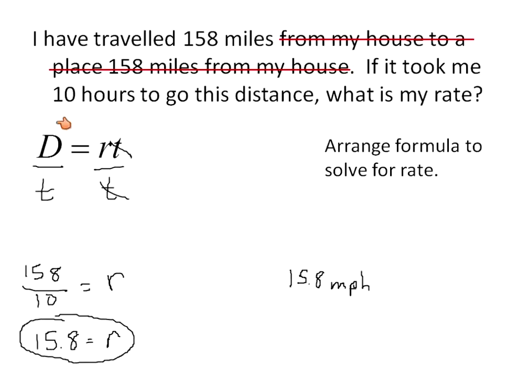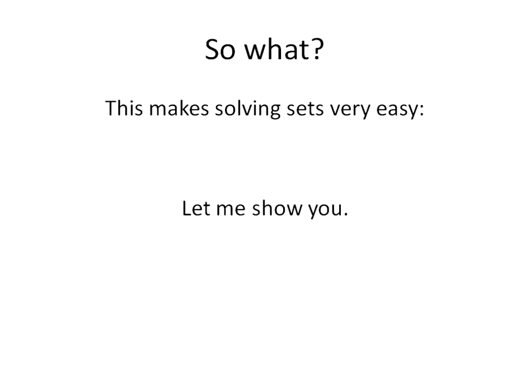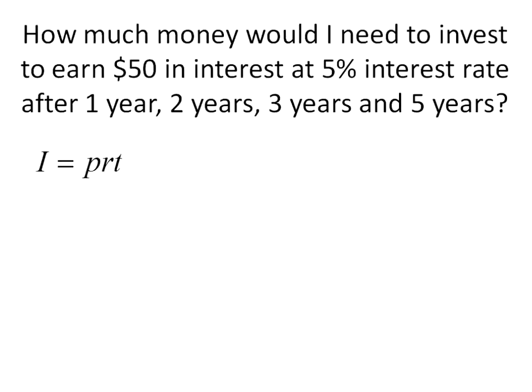Again, this helped me to be able to arrange my formula, being that the rate is the distance divided by the time, and I can solve for my rate. So basically, does that save us any time? Rearranging the equation, it seems like a little bit of extra work at the beginning, work with variables. So let's go ahead and take a look at if this actually makes solving questions a little bit easier. I'm just going to show you an example of a question, and I'm going to go through this pretty quickly. How much money would I need to invest to earn $50 in interest at 5% interest rate after 1 year, 2 years, 3 years, and 5 years?